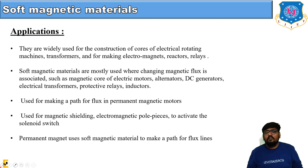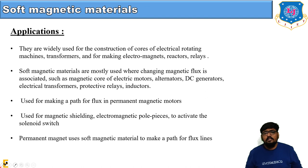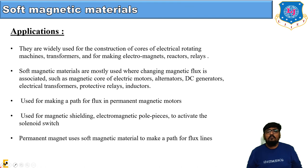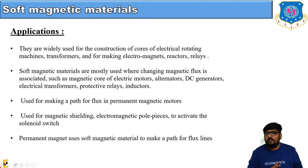Applications of soft magnetic materials include construction of cores of electrical rotating machines, transformers, electromagnets, reactors, and relays. They are mostly used where changing magnetic flux is associated — such as in electric motors, alternators, DC generators, electrical transformers, protective relays, and inductors. They are also used for magnetic shielding, electromagnetic pole pieces, solenoid switches, and to provide a flux path in permanent magnet motors.